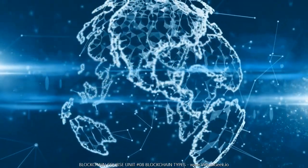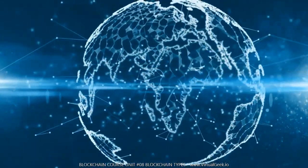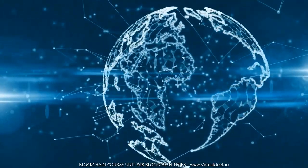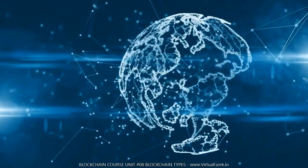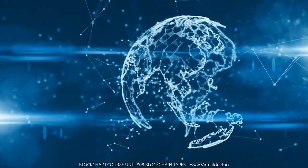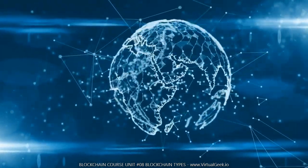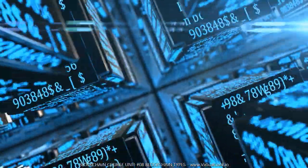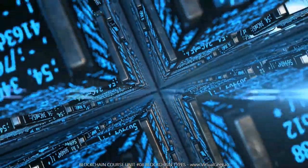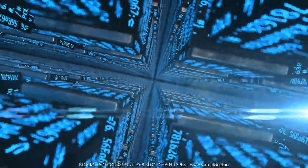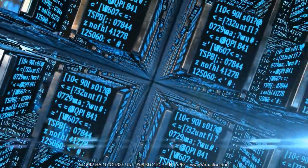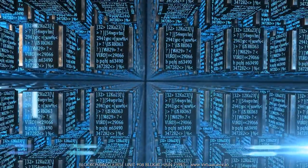Goals: the objectives of Unit 8 and 9 are: to know the different types of blockchain and their characteristics; to know in which cases to implement each type of blockchain; to know the advantages and disadvantages of each type; to know the term IoT or Internet of Things, what it consists of and its relationship with the blockchain; to learn about the different potential applications IoT already has in our society; and to learn how to create a blockchain with free online tools.